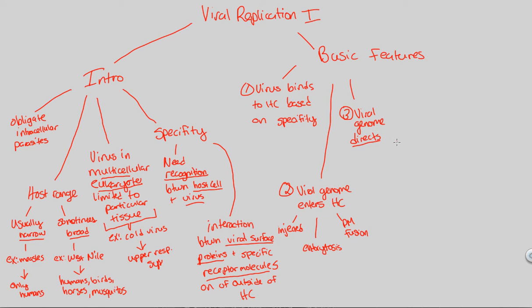The viral genome directs protein production specifically. Protein production. If you direct protein production, you are essentially going to be taking over the cell. So there's a HC takeover, we say, a host cell takeover of sorts, because you are taking over all of the protein production in order for the proteins to make all of the viruses that are eventually going to be the result of this initial infection. So what is this takeover?